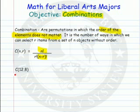Let's take 12 things, drawing 8 of them, and the order does not matter. So it would be 12 factorial over 8 factorial times 12 minus 8 factorial.